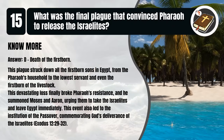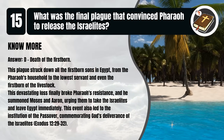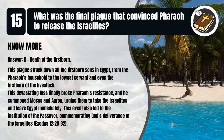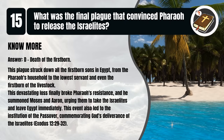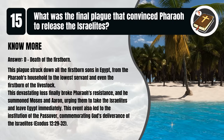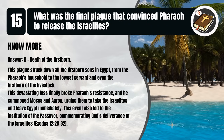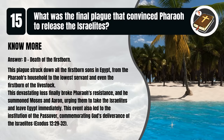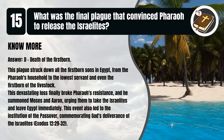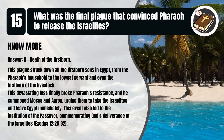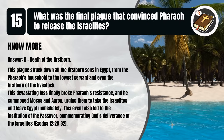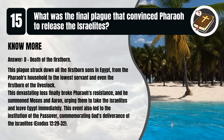That's D. Death of the firstborn. This plague struck down all the firstborn sons in Egypt, from the Pharaoh's household to the lowest servant and even the firstborn of the livestock. This devastating loss finally broke Pharaoh's resistance, and he summoned Moses and Aaron, urging them to take the Israelites and leave Egypt immediately. This event also led to the institution of the Passover, commemorating God's deliverance of the Israelites. Exodus 12:29-32.